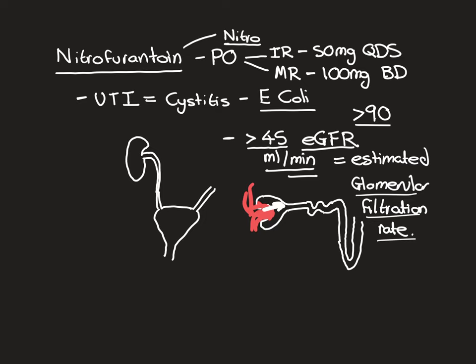We want patients we're going to give nitrofurantoin to have an eGFR ideally above 45. Between 30 and 45, you can probably get away with prescribing it, but ideally it should be above 45. Below 30, you really shouldn't be prescribing nitrofurantoin — you should choose something else. The 30 to 45 range is a little soft, but below 30 you really, really shouldn't.